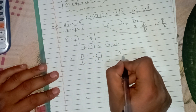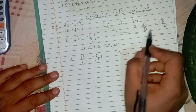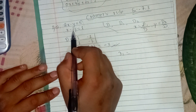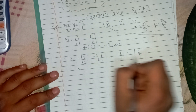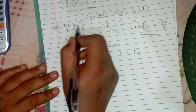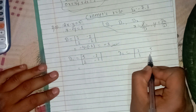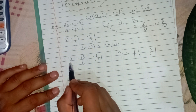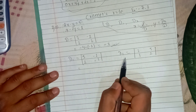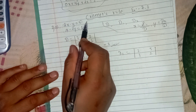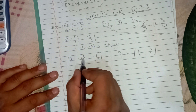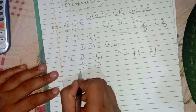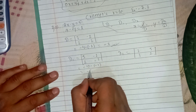For D2, we change y's coefficient column with the constants. We compute 5 into minus 2, which is minus 10, minus minus 1, giving minus 10 plus 1, which equals minus 9.